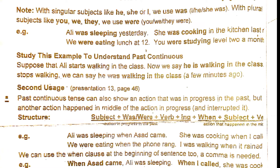With subjects he, she, or I, we use 'was.' With plurals like you, we, or they, we use 'were.'